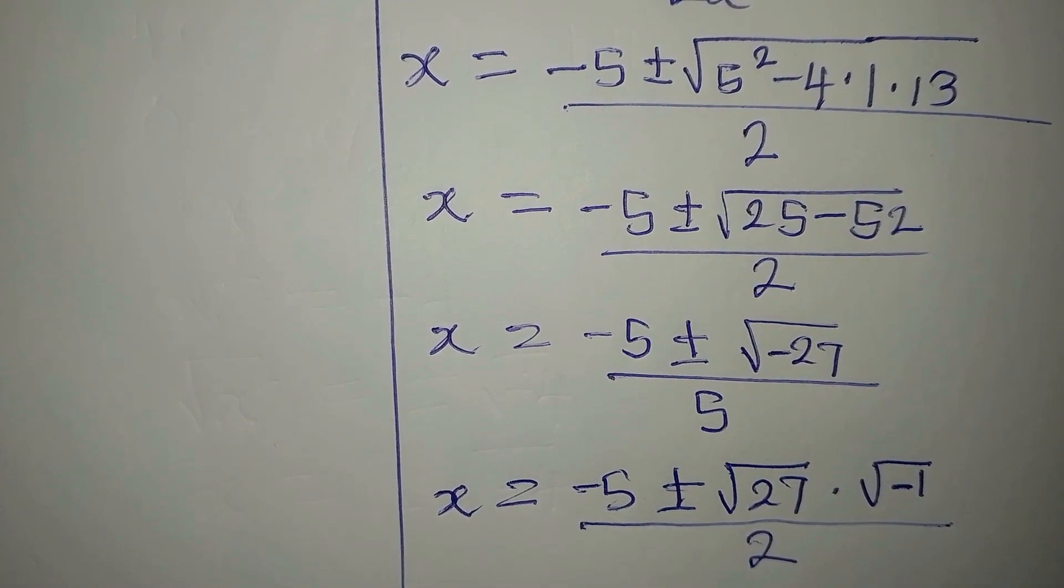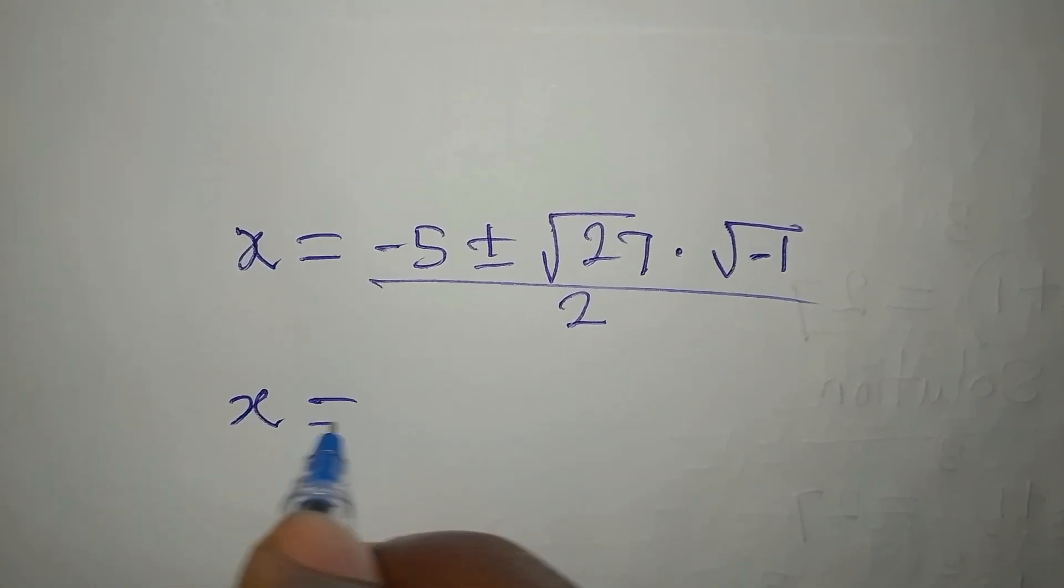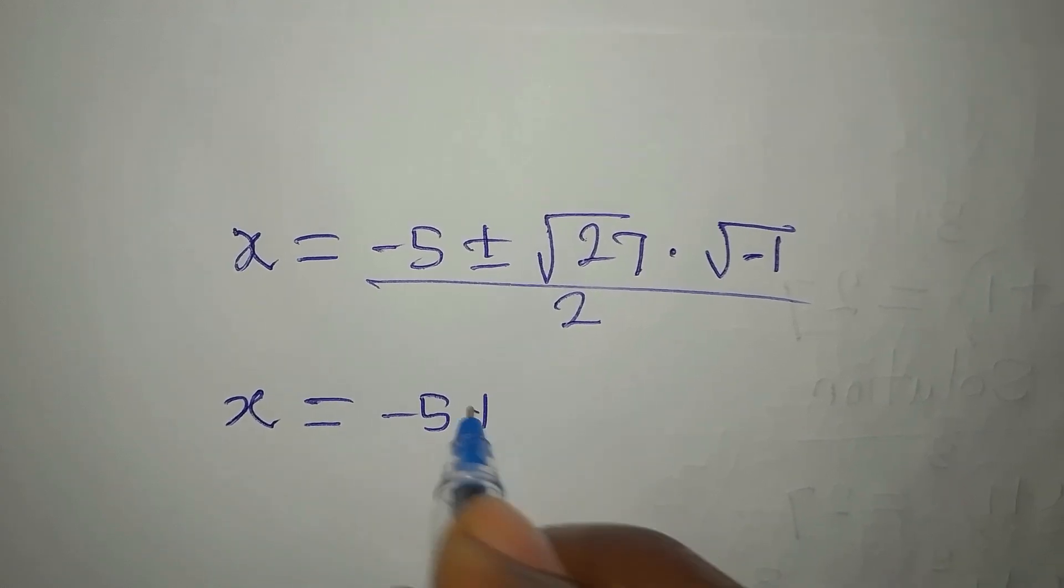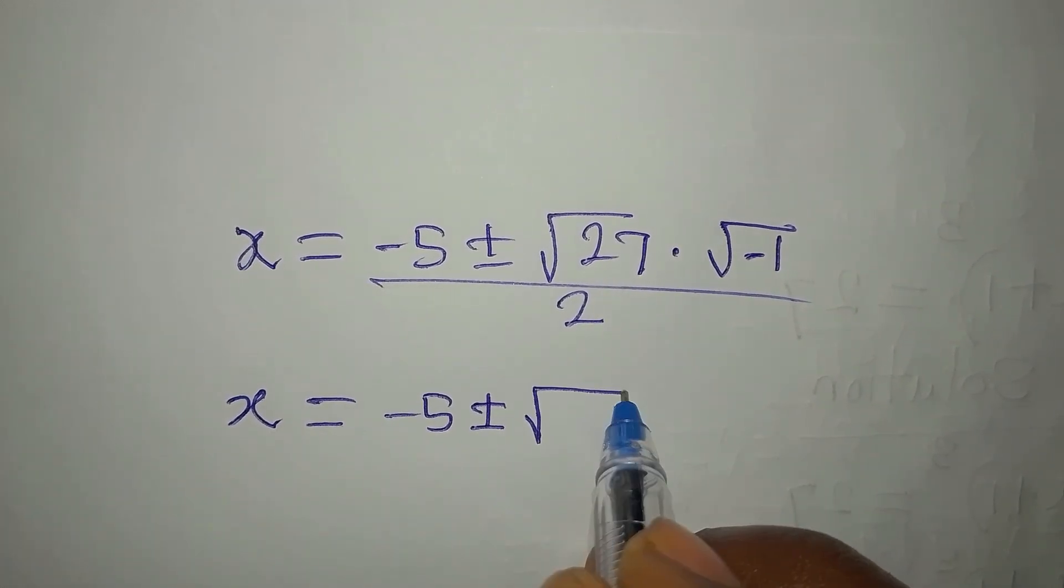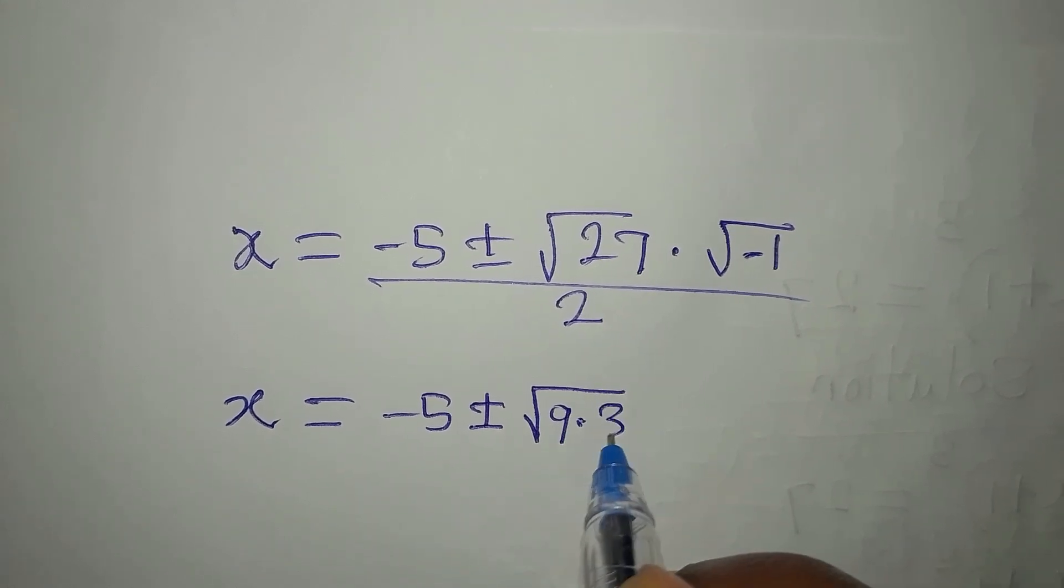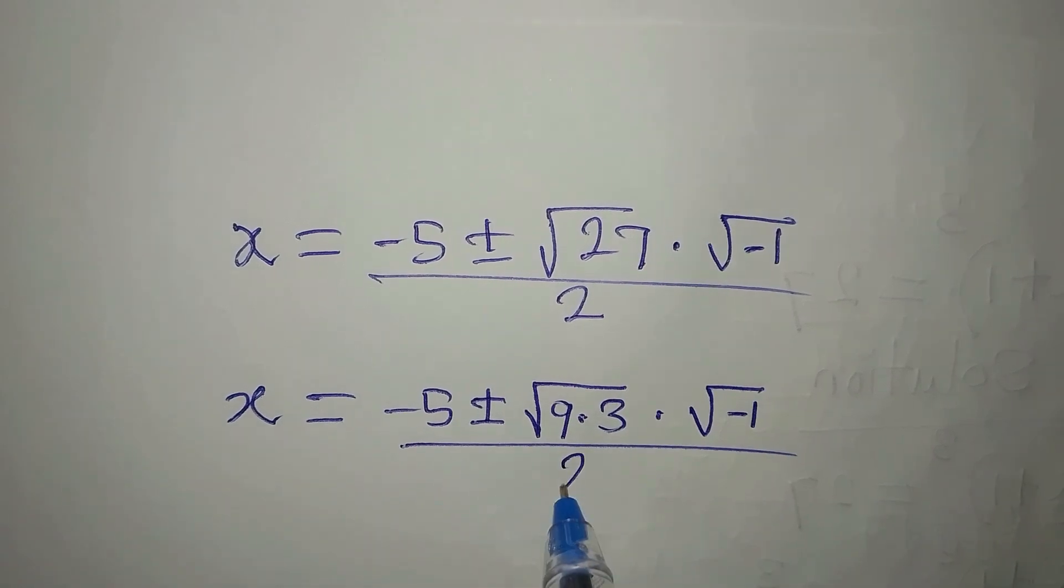Let's go ahead. From here, our x will now be negative 5 plus or minus square root of 9 times 3 times square root of negative 1, divided by 2.